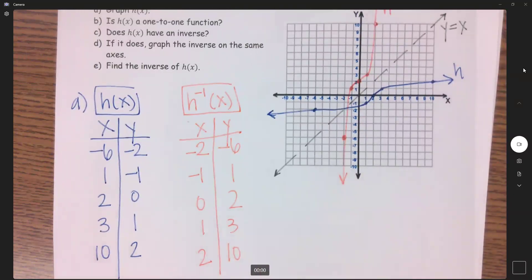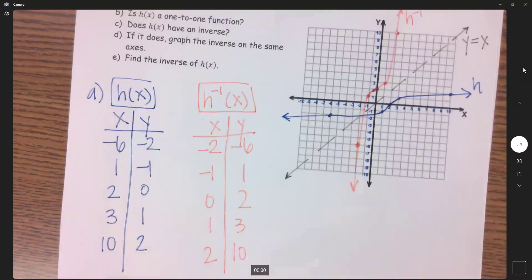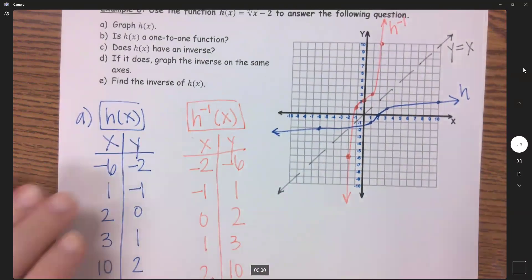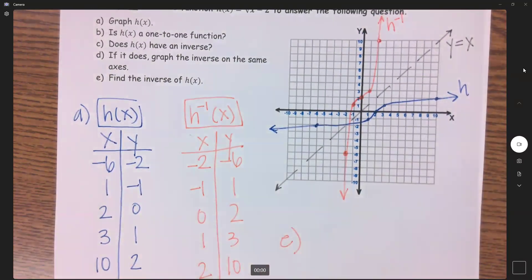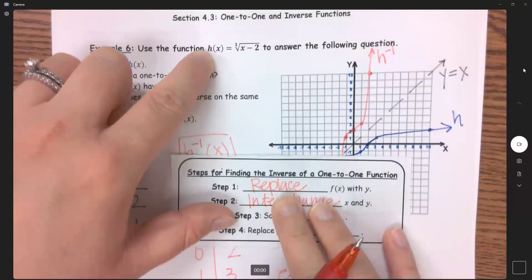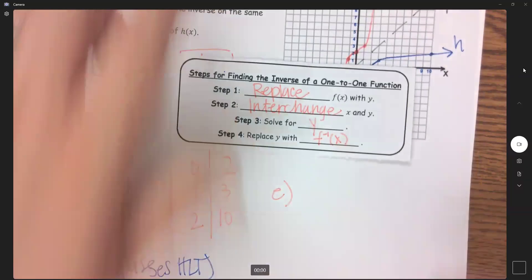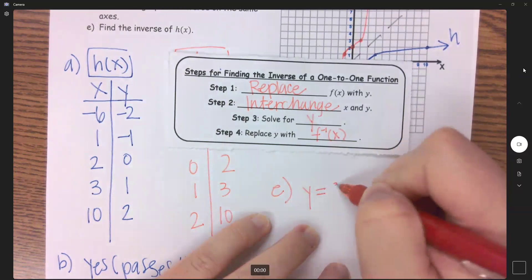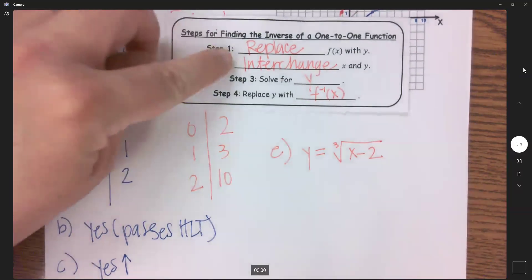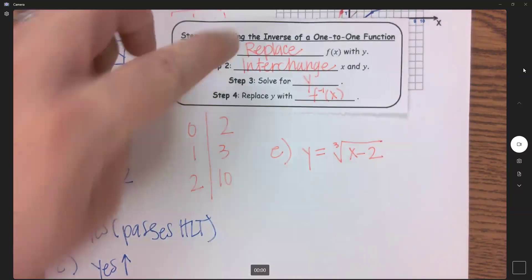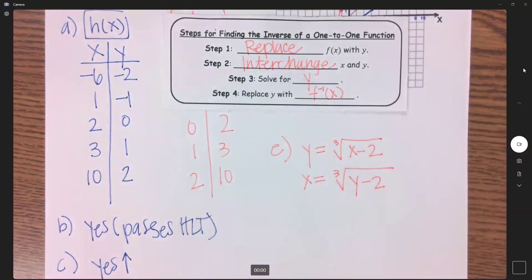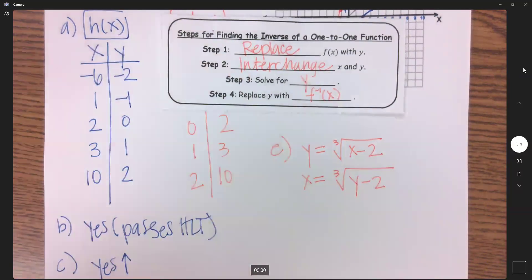And so the last part, and maybe the hardest part, is actually finding the inverse. So we have graphed the inverse. So what is the name of that graph? So following our steps again, the first thing we're going to do is replace our F of X with Y, or in this case, our H of X. So now I have Y equals the cubic root of X minus 2. Second thing is interchange X and Y. So now I have X equals the cubic root of Y minus 2.